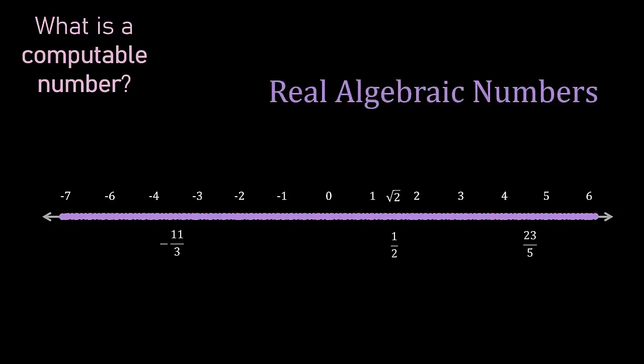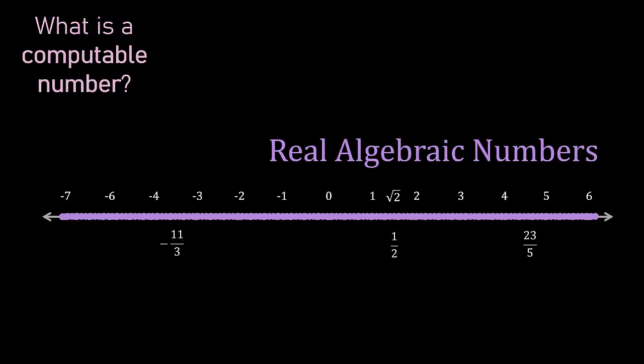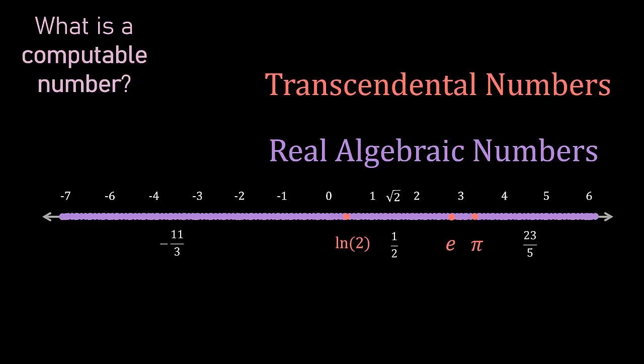Those are the roots of certain numbers which cannot be reduced to rational. In general, this new set is called the real algebraic numbers, the ones that are a solution to an algebraic equation. Then again, we still have holes in our number line, which are the transcendental numbers, such as pi, e, logarithm of 2, etc.